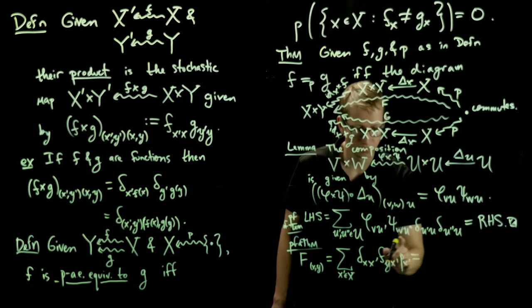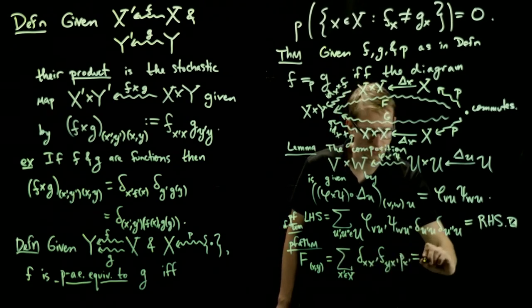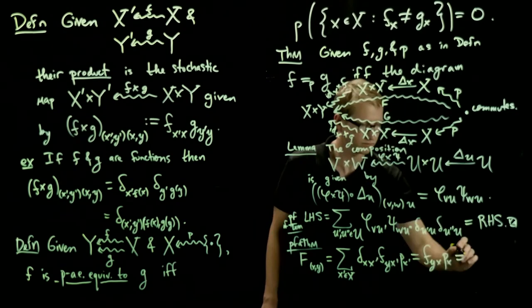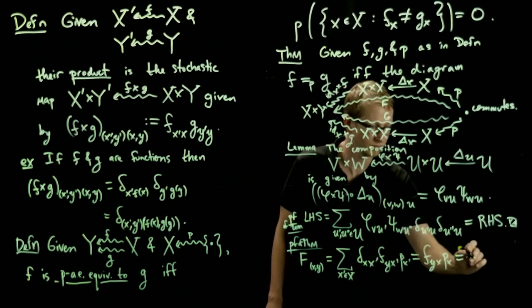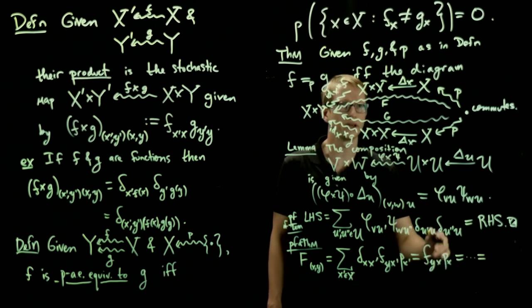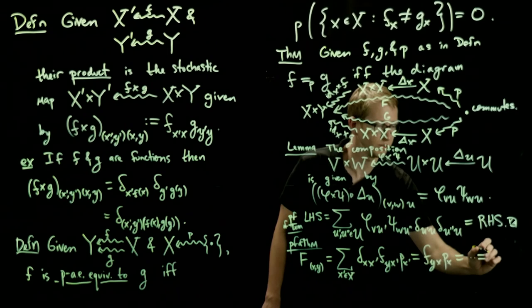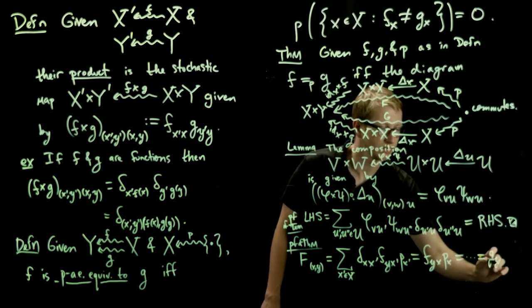Now we already have a delta function because of this identity map. So that summation drops, and we end up with f_yx p(x). And by going around the other way on the bottom, by a very similar calculation, we'll get that this equals g_yx p(x).